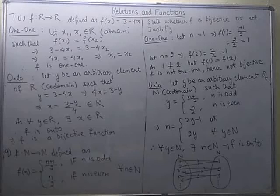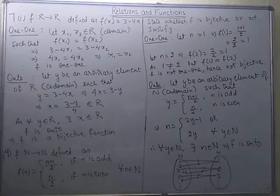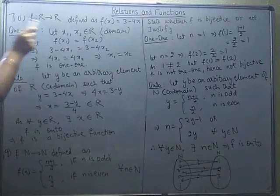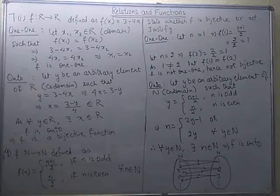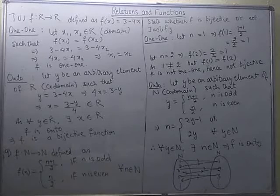Taking question number 7 and 9. The 7th one is a polynomial function. The domain is the set of real numbers, and the co-domain is also the set of real numbers. The function is defined as f(x) = 3 minus 4x. We have to check whether it is one-one and onto or not.